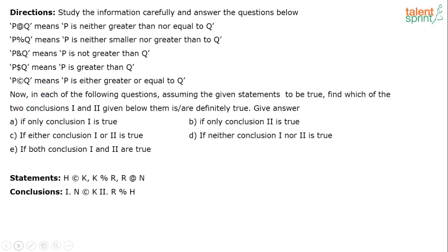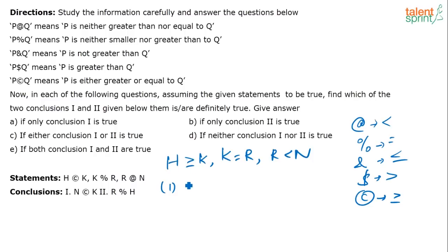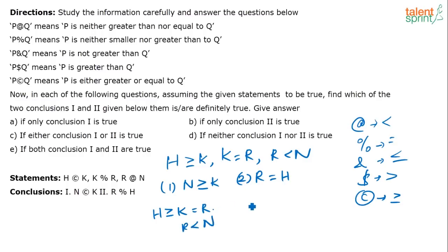Let's move on to the next question. Let me write down these symbols — if you write them down only once, solving becomes very, very easy. Here 'C' means greater than or equal to. H C K means H greater than or equal to K, K equal to R, R less than N — that is given. The first conclusion is N C K, meaning N greater than or equal to K, and the second is R equal to H.